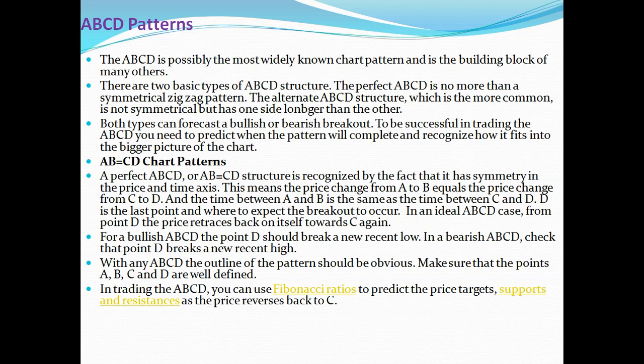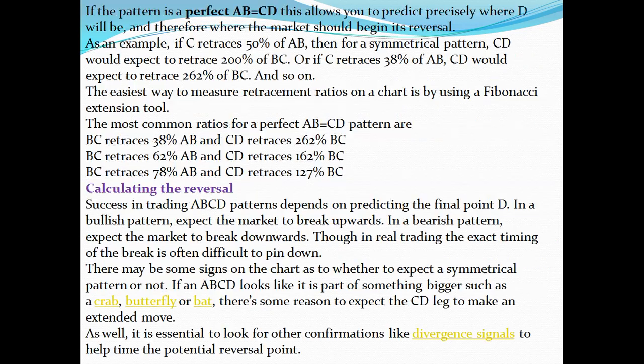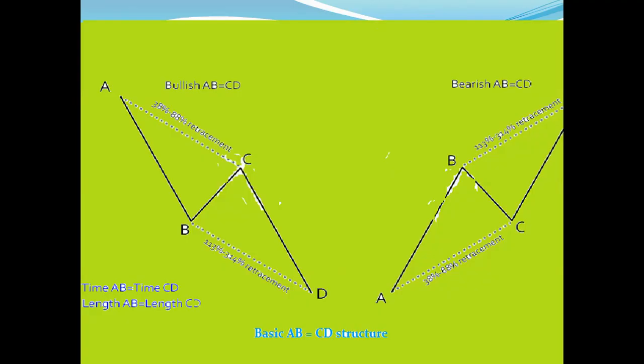The outline of the pattern should be obvious — make sure the points ABCD are well defined. In trading ABCD, you can use Fibonacci ratios to predict the price target, support and resistance, as the price reverses back to C. You can see this is the ABCD pattern: the first is a bullish ABCD and the other is a bearish ABCD pattern.